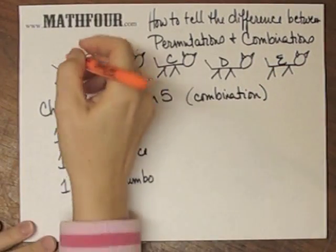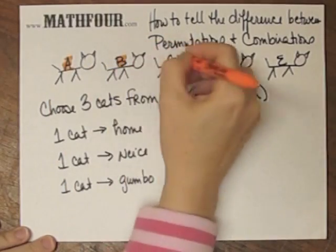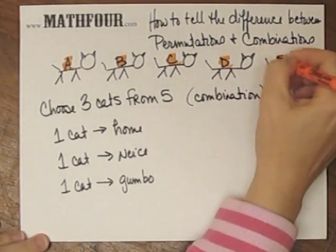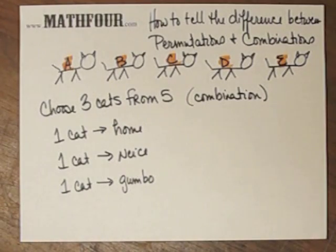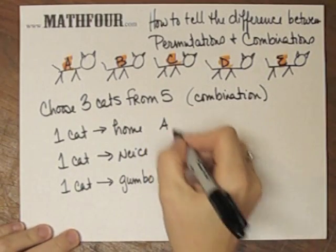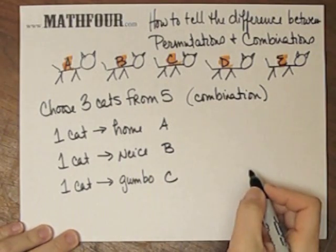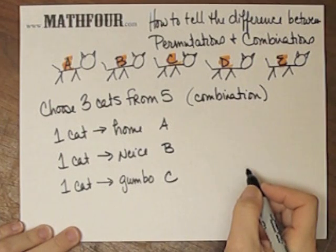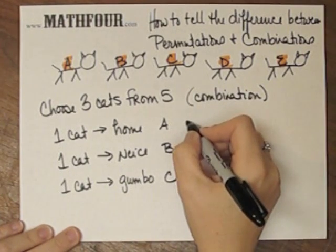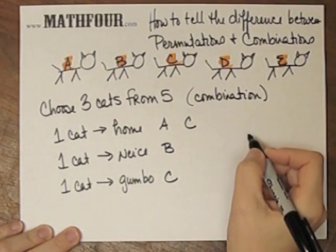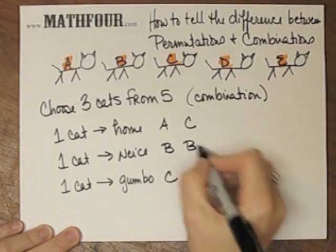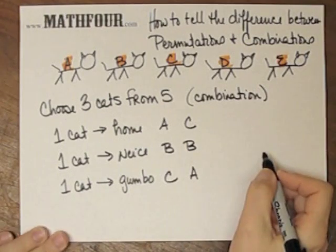I have cats A, B, C, D, E. Cat A can come home with me and B can go to my niece and C can go into the gumbo, which is very different than cat C coming home with me and cat B going to my niece and cat A going into the gumbo.